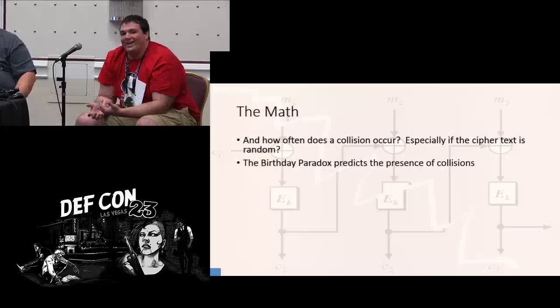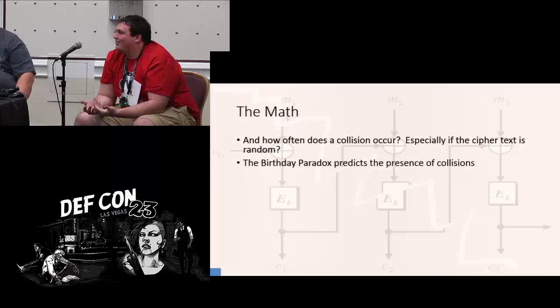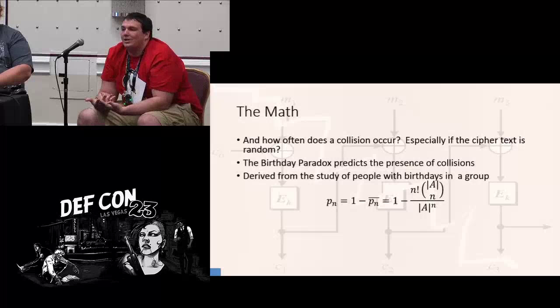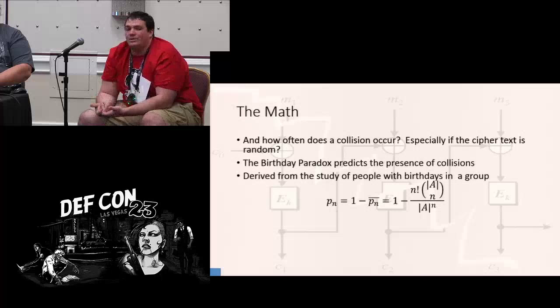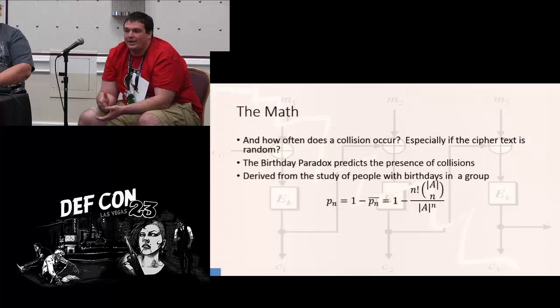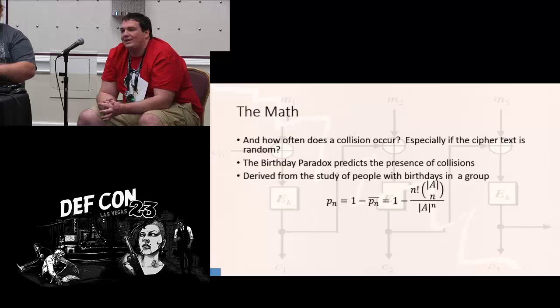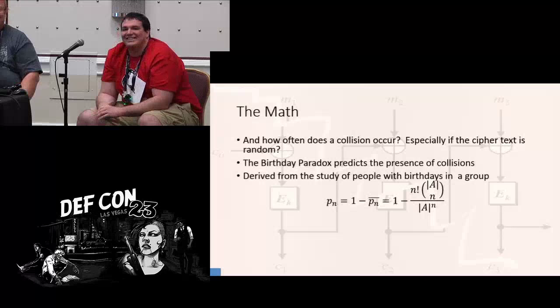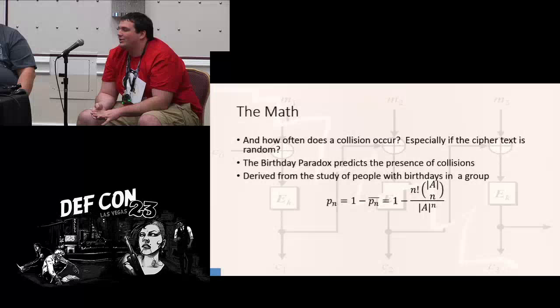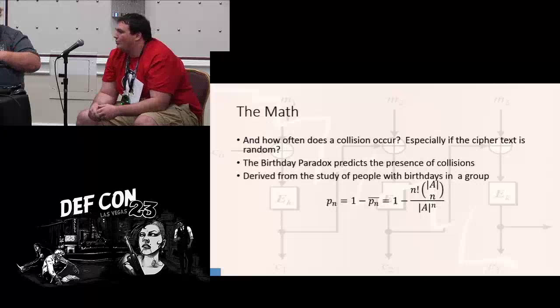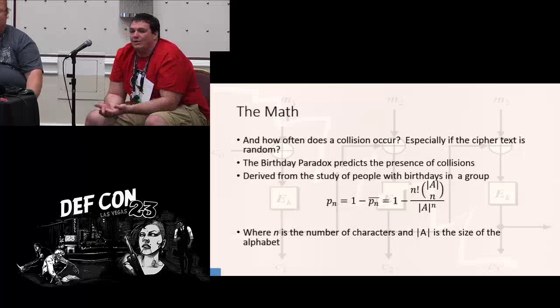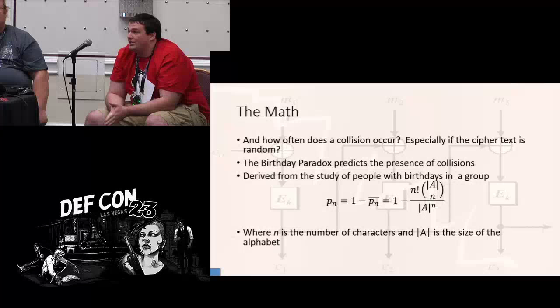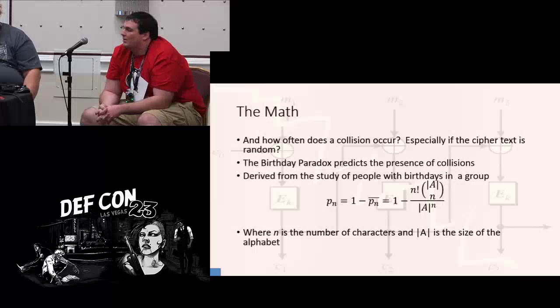How often does a collision happen? With the birthday paradox. The birthday paradox predicts the presence of the collisions. Basically, the birthday paradox comes from the study of how often birthdays happen. If you want a 100% chance to have a repeated birthday, you'd have to have 356 people. But when they looked at the math, the reality of it was you could actually go down to 23 people. See that 23 come up again? And with 23 people, you have a 50% chance of a repetition of a birthday. So, the more information you have, the more collisions we get.